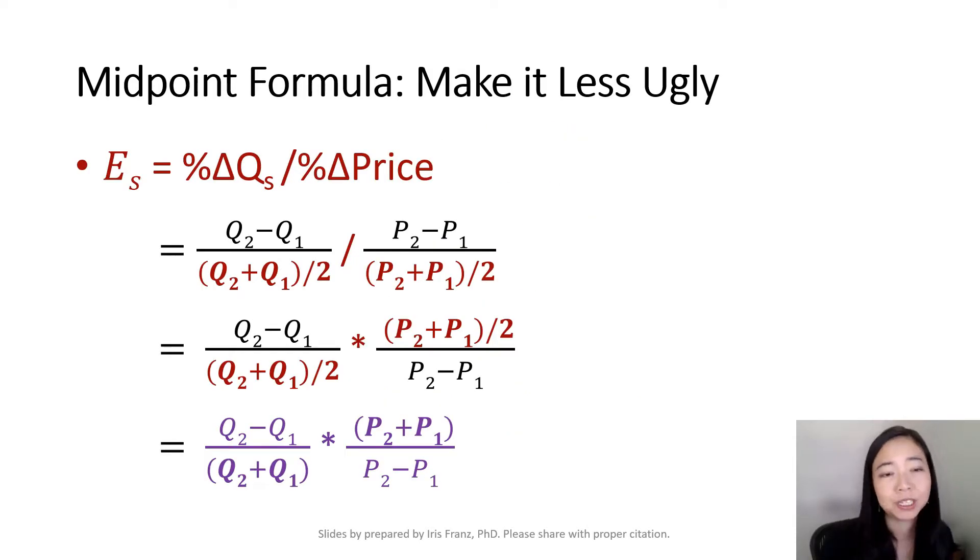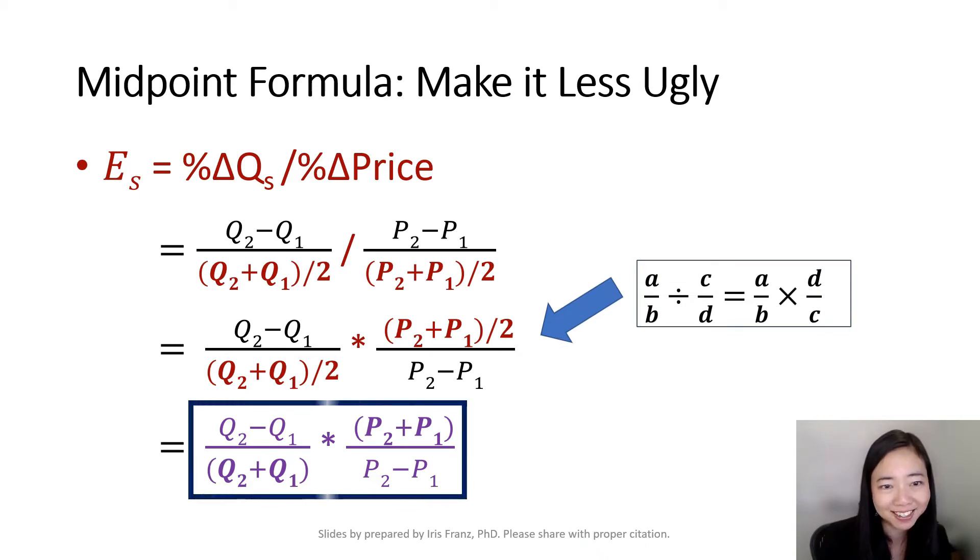Now the problem with the midpoint formula is that you have a fraction divided by a fraction, which is kind of ugly. But we can use a fraction multiplying the reciprocal of the other fraction, and then we cross out the half. Eventually, you get this formula: Q2 minus Q1 over Q2 plus Q1 times P2 plus P1 over P2 minus P1.